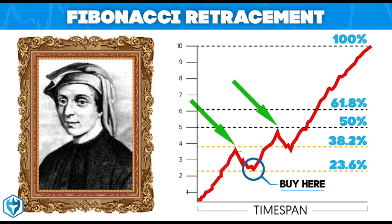This is a short-term price correction during an overall uptrend or downtrend. For example, this is an uptrend market and you have a short-term correction. If you buy here, you can get a correction. Market always makes a correction — it's not going straight up. In a normal condition the market goes like this and it has to make a correction.